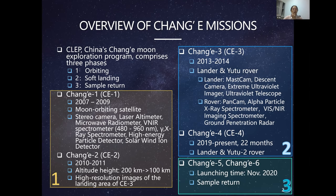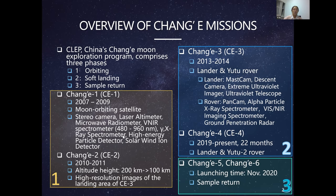The missions also aimed to obtain the distribution of useful elements and materials below the lunar surface using VNIR spectrometers and gamma and X-ray spectrometers, detect properties of lunar soil with a microwave radiometer, and explore the space environment between the moon and Earth using high-energy particle detectors and solar wind ion detectors.